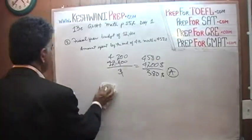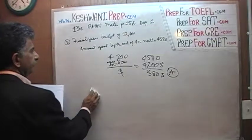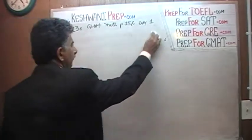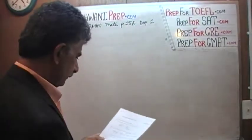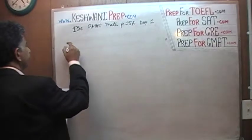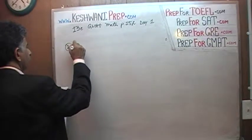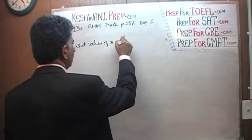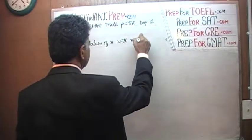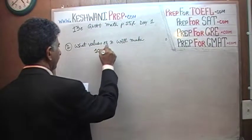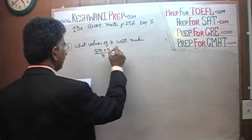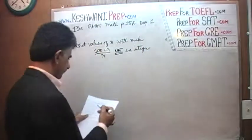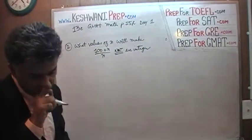Let's look at problem number two. It says: for what values of n will 100 plus n over n not be an integer? They give you the values, 1 through 5. So let's find out.